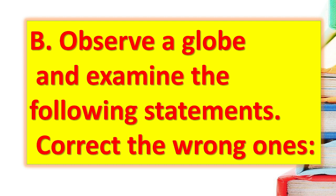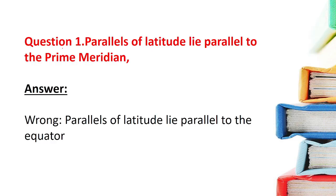Question B: Observe a globe and examine the following statements — correct the wrong ones. Statement 1: Parallels of latitude lie parallel to the prime meridian. This is wrong, because parallels of latitude lie parallel to the equator, not the prime meridian.